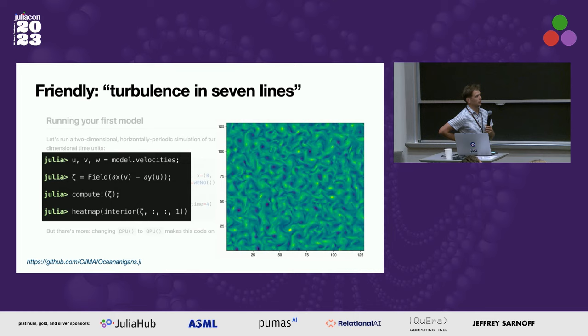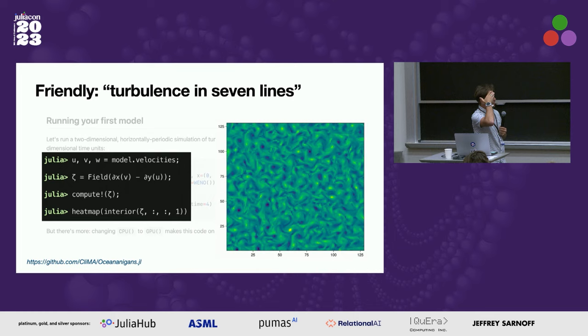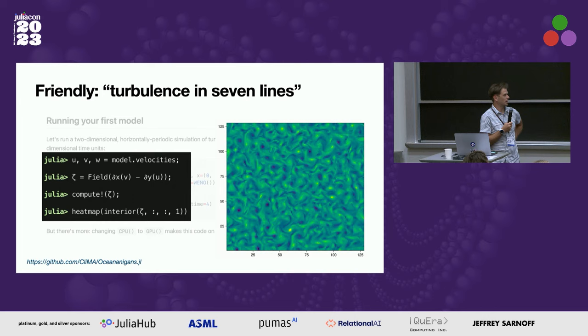Another core aspect of Oceananigans' design is a system for computing diagnostics that are a function of the model data. For example, here I illustrate how you would compute vorticity from the model velocities. We've tried to design it so that users who are physical scientists can use a syntax that resembles the math they know to write code — that's another important feature of Oceananigans' ease of use.